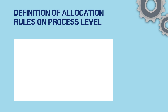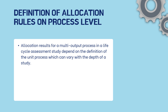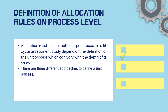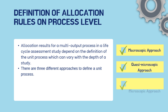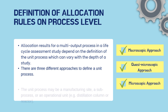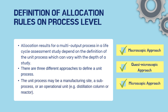Regarding the definition of allocation rules on process level: allocation results for a multi-output process in an LCA study depend on the definition of the unit process, which can vary with the depth of the study. There are three different approaches to define a unit process: the macroscopic approach, the quasi-microscopic approach, and the microscopic approach. The unit process may be a manufacturing site, a sub-process, or an operational unit, for example a distillation column or reactor.